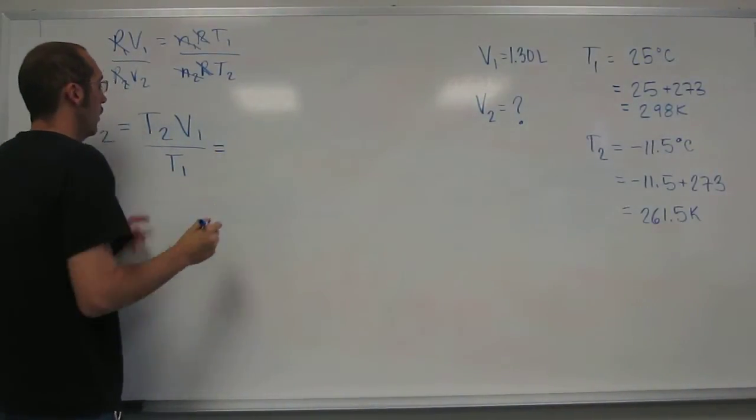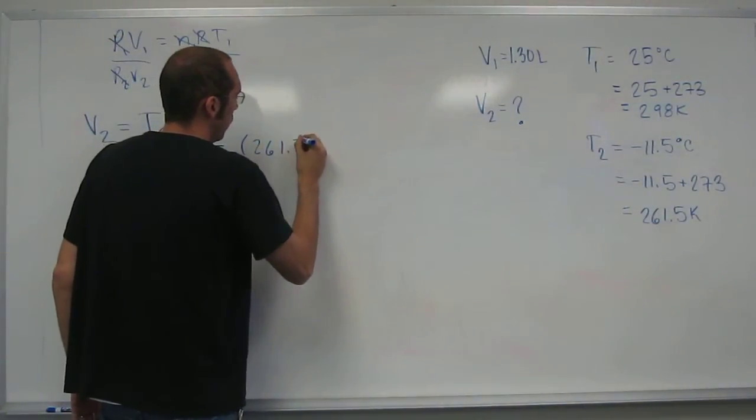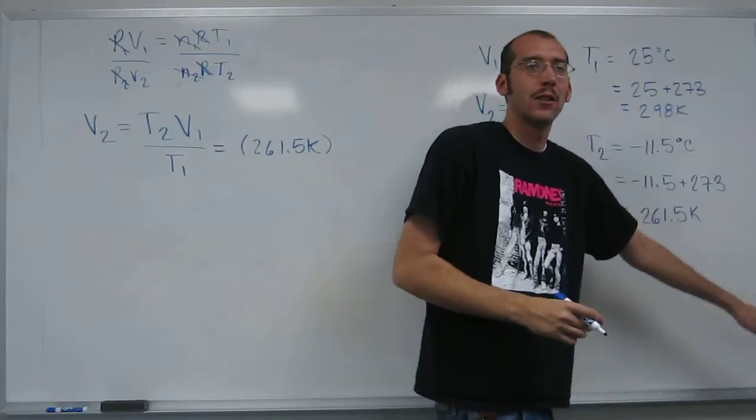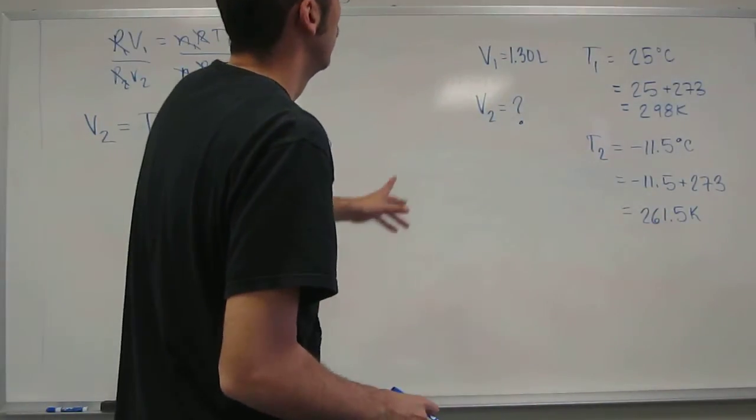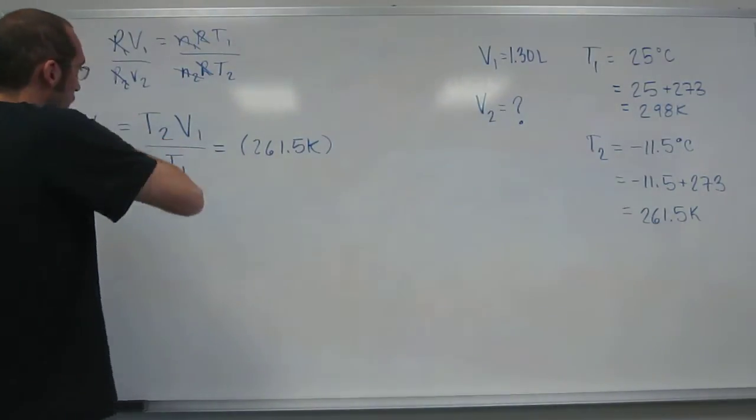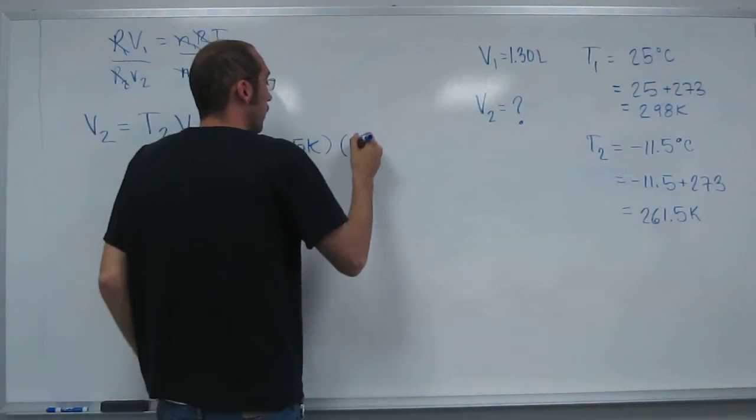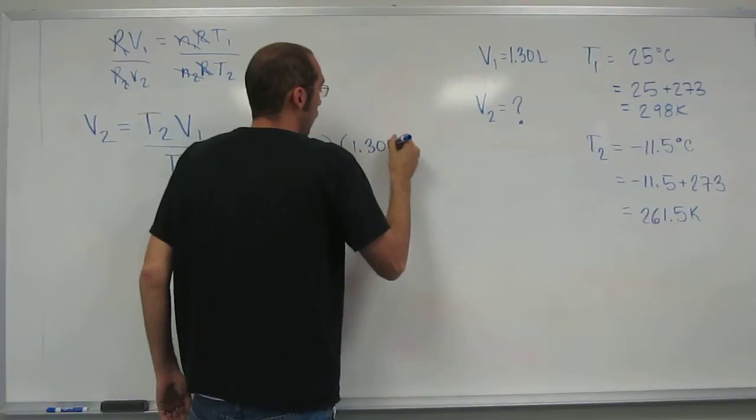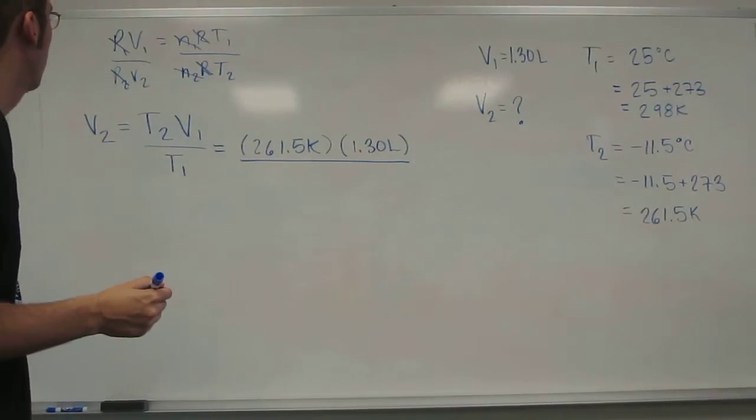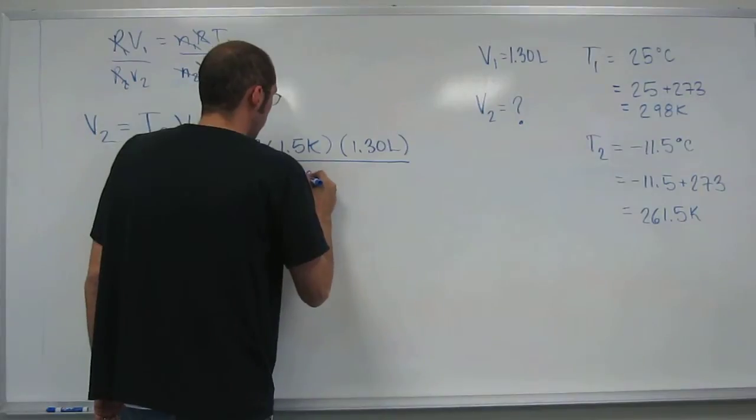So what's T2? T2, 261.5 Kelvin. 261.5 Kelvin. I left all of that just because the final answer I'm going to take to three sig figs. Okay? So V1 is going to be 1.30 liters divided by T1, which is 298 Kelvin.